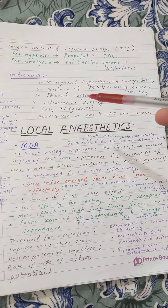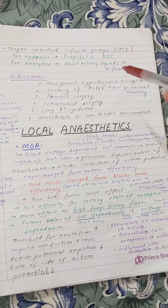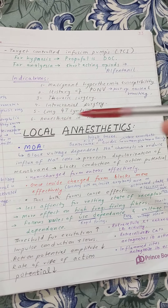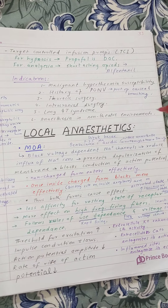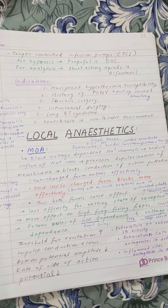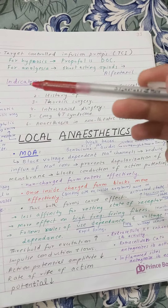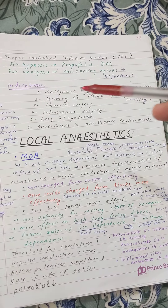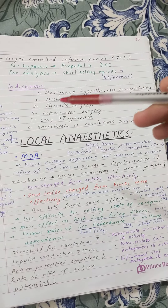In thoracic surgery, we don't give inhalational anesthesia and prefer total intravenous anesthesia. In long QT syndrome, we also avoid inhalational anesthesia and use IV routes instead. So the indications for TIVA include malignant hyperthermia, post-operative nausea and vomiting, thoracic surgery, and long QT syndrome.